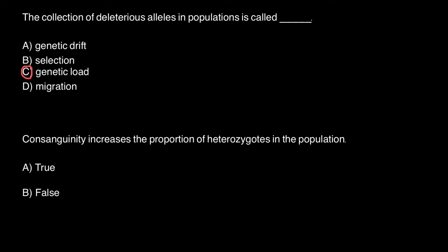The second question: consanguinity increases the proportion of heterozygotes in the population. Is it true or false? In order to show you how to solve this problem,